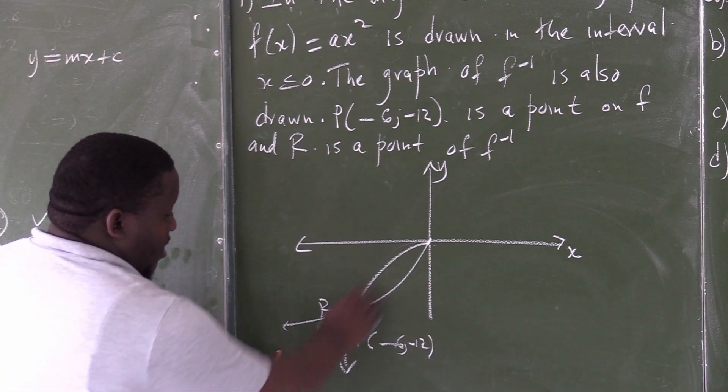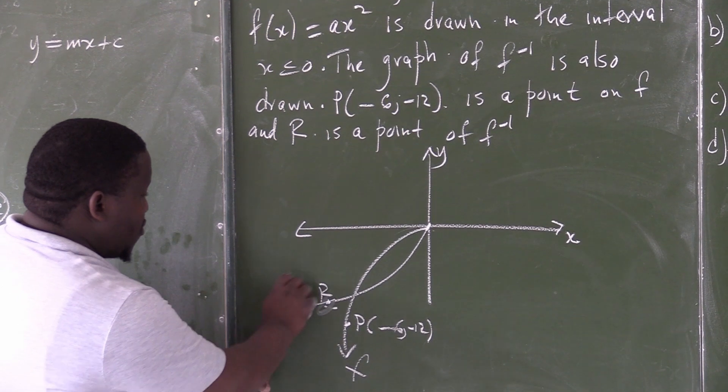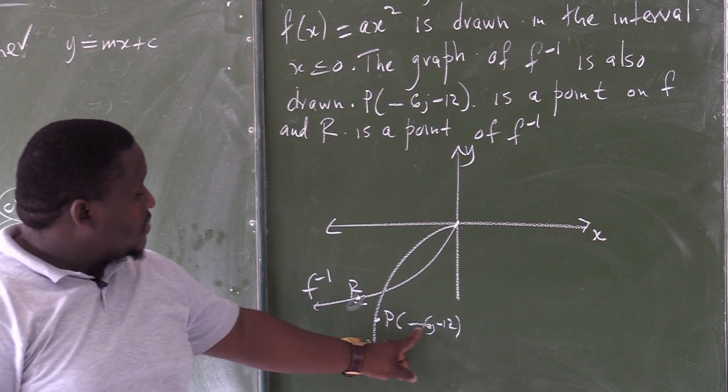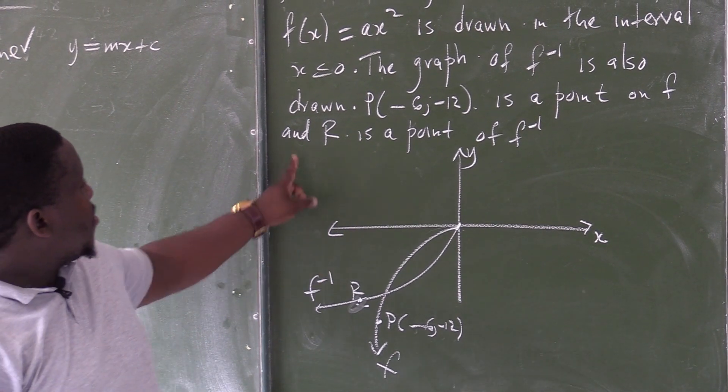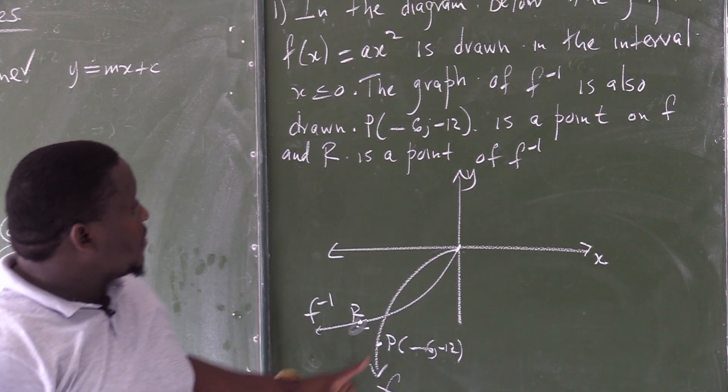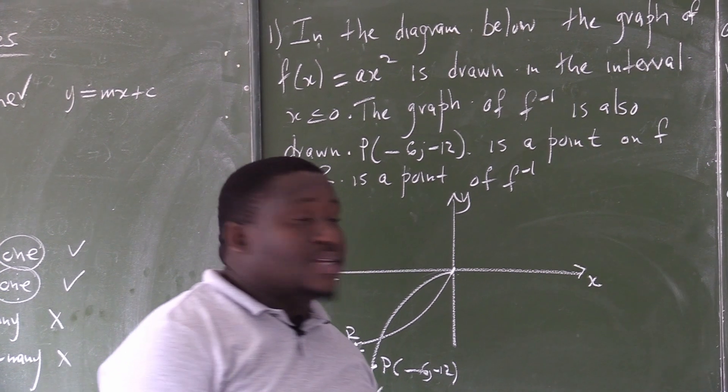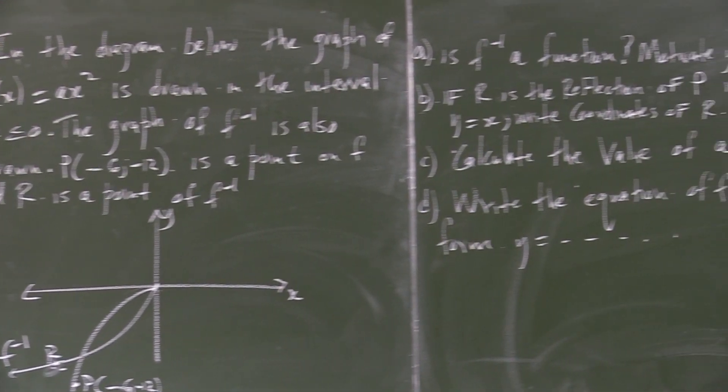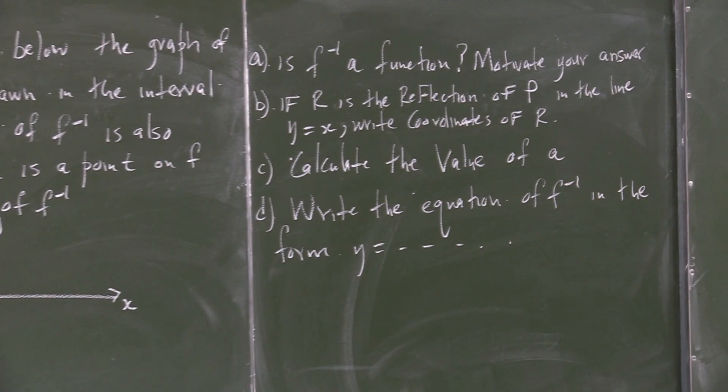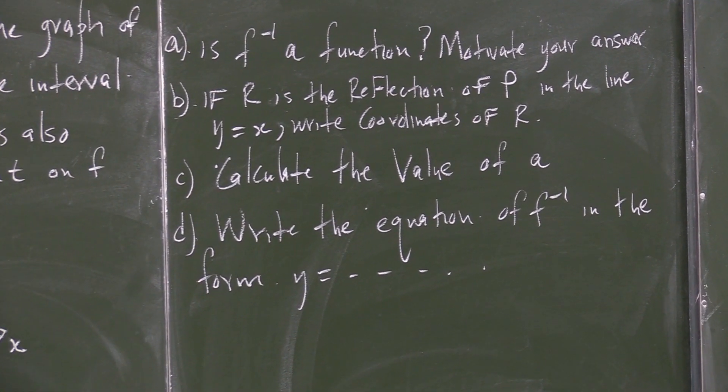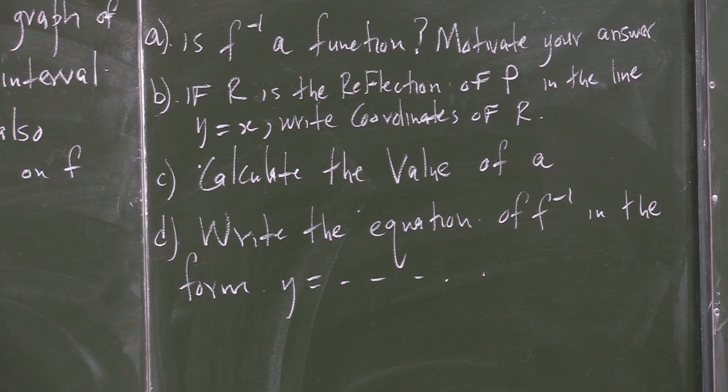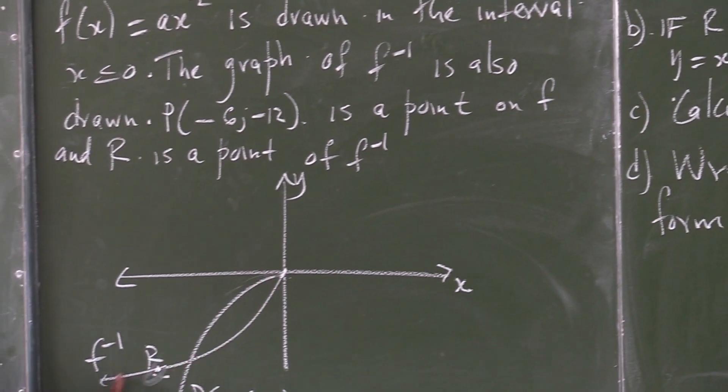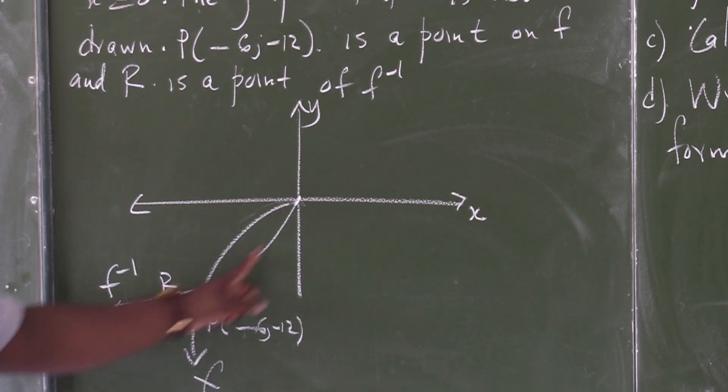So we have f, we also have the inverse. So we can see that this one will be our f and this one will be our inverse. Point P is given, negative 6 and negative 12. Point R is also given there. Now, the first question is, is the inverse of f a function?